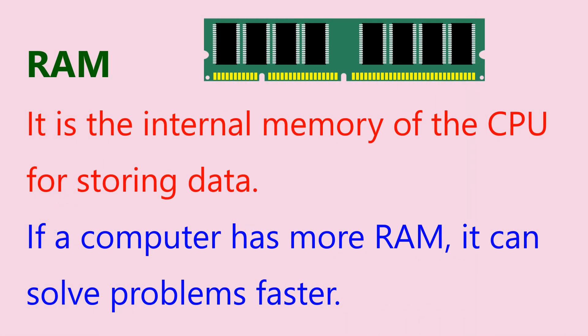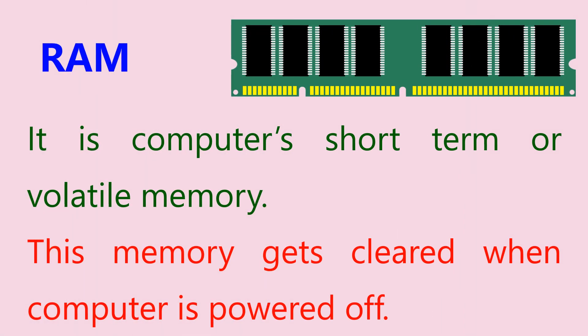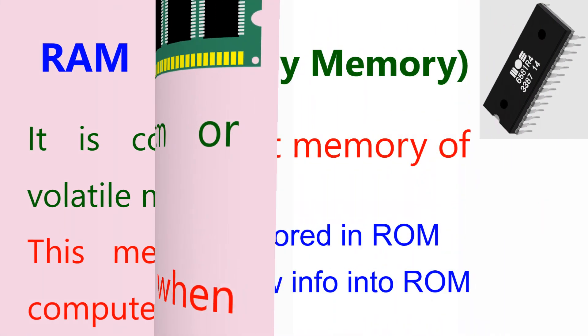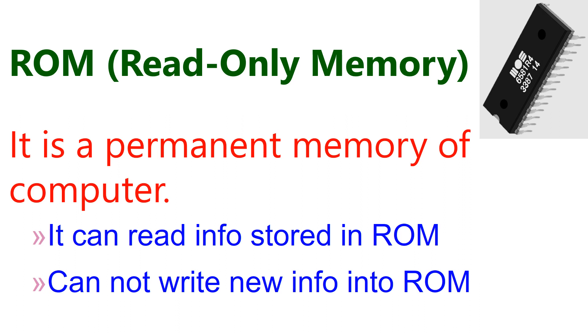RAM is the internal memory of the CPU for storing data. If a computer has more RAM, it can solve problems faster. RAM is short-term, or volatile, memory — it gets cleared when the computer is switched off. ROM is the permanent memory of the computer. The computer can read but cannot write information into ROM.